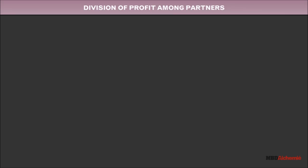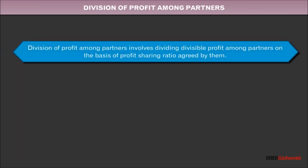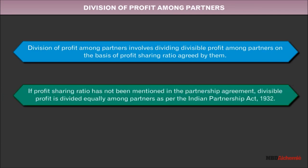Division of profit among partners involves dividing divisible profit among partners on the basis of profit sharing ratio agreed by them. If the profit sharing ratio has not been mentioned in the partnership agreement, divisible profit is divided equally among partners as per the Indian Partnership Act 1932.